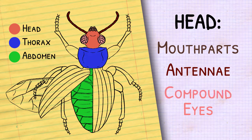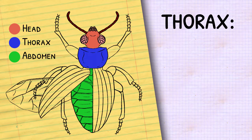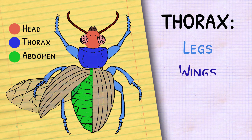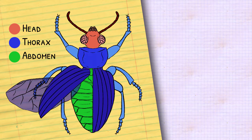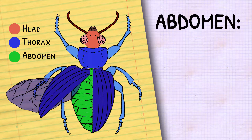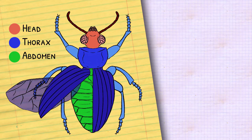The thorax is where all six legs of the insect connect, as well as their wings. And lastly, the abdomen — this part of the bug holds a lot of the internal organs.